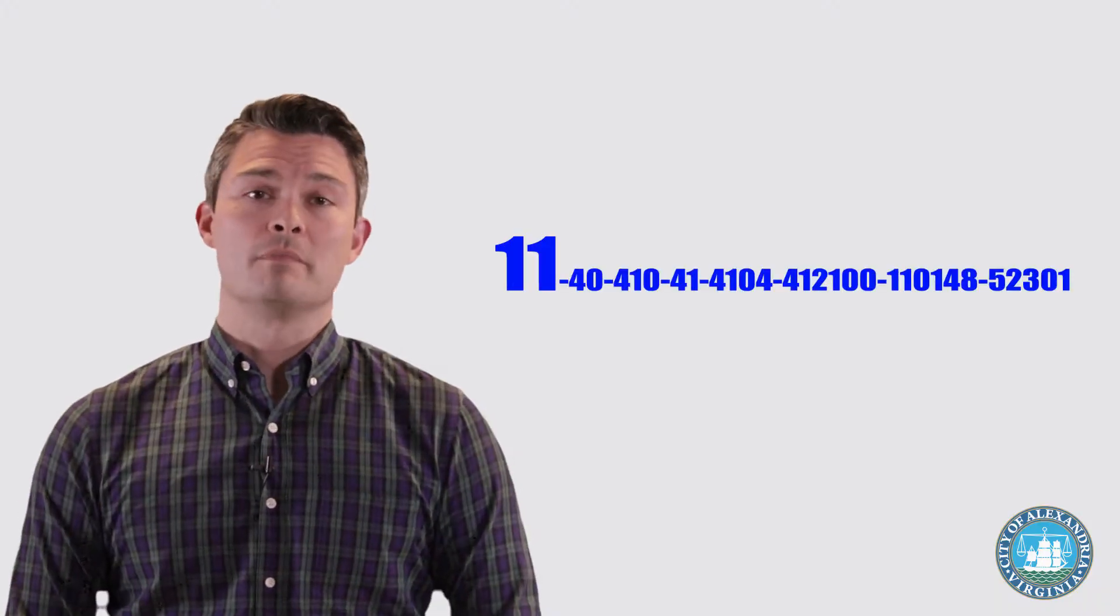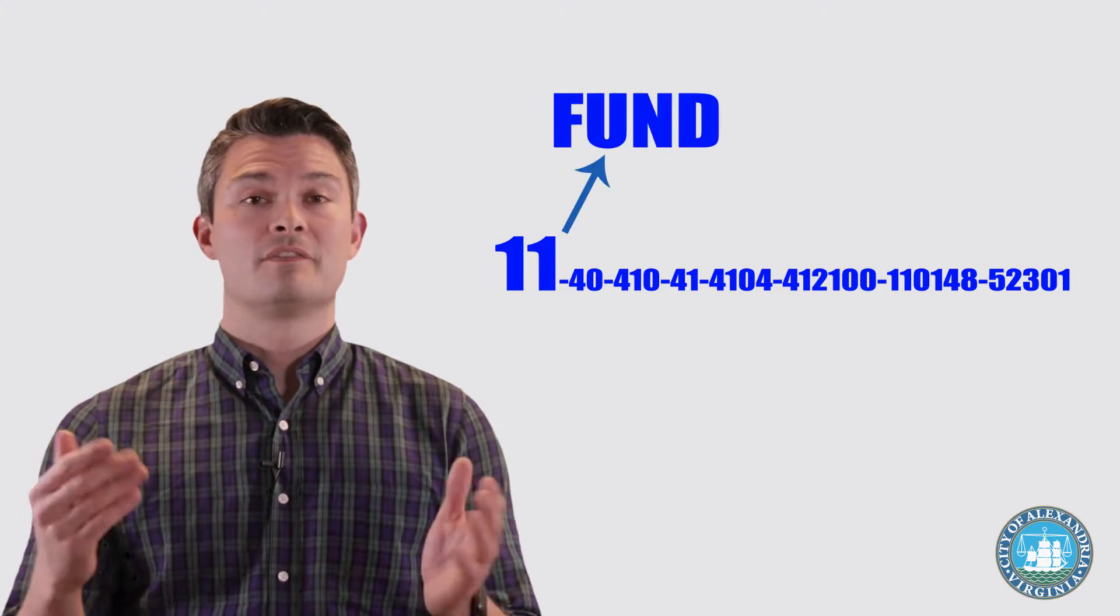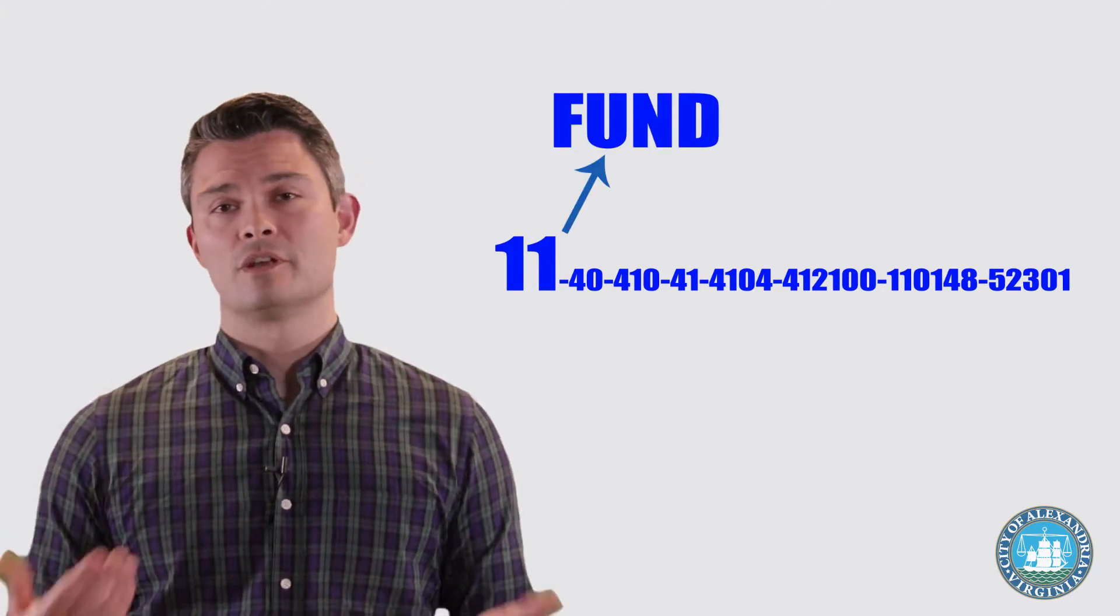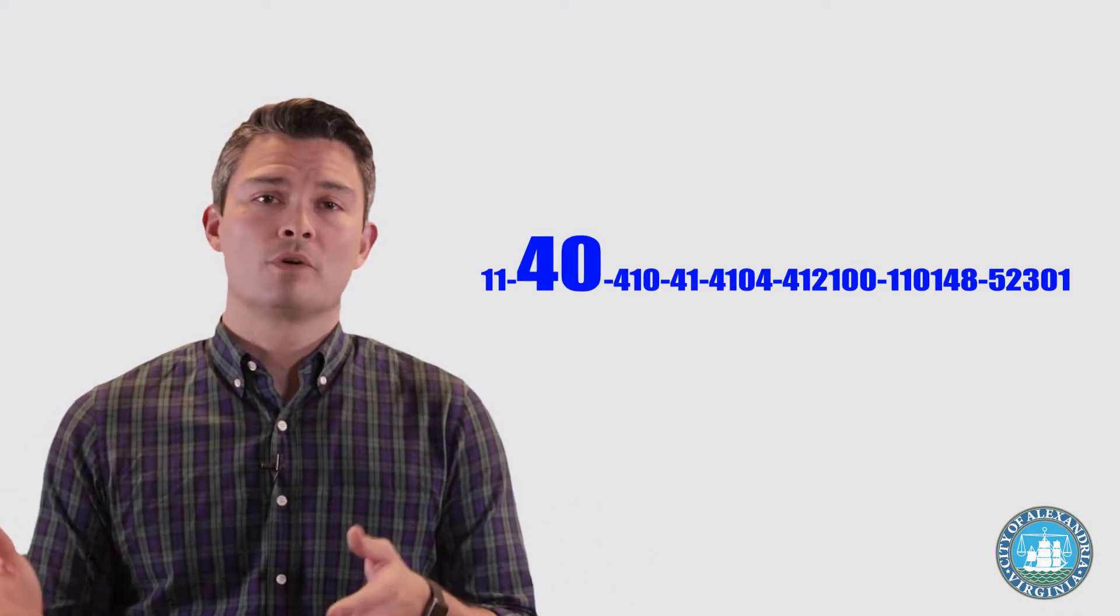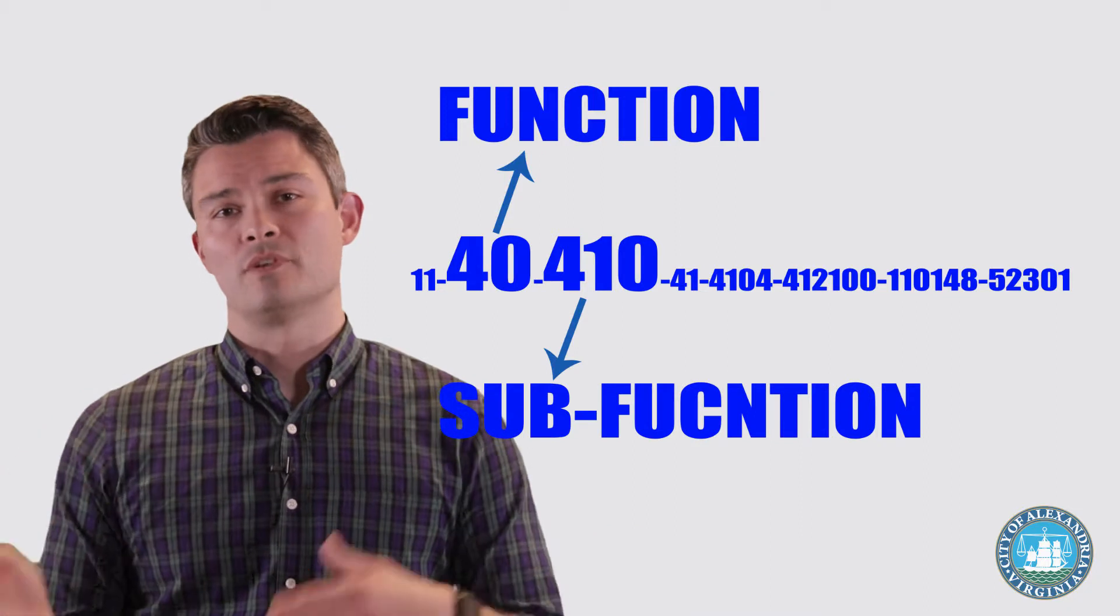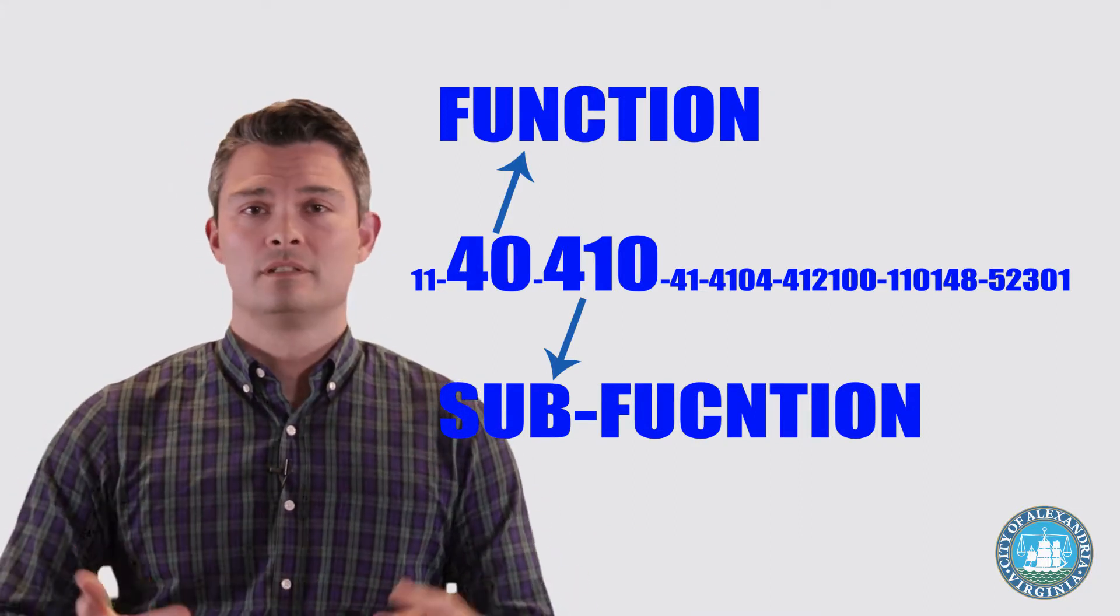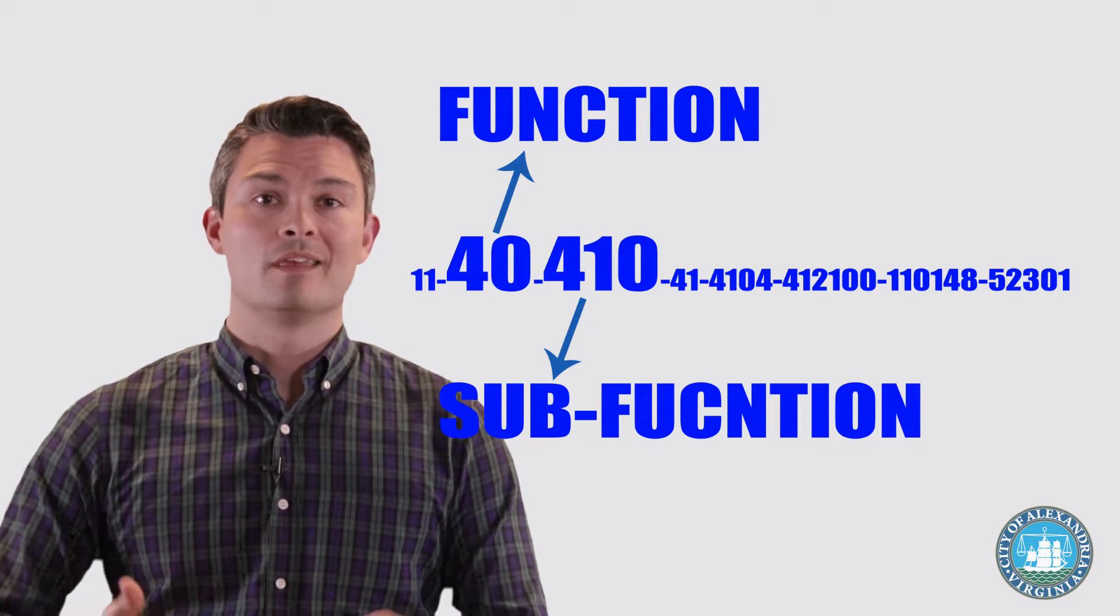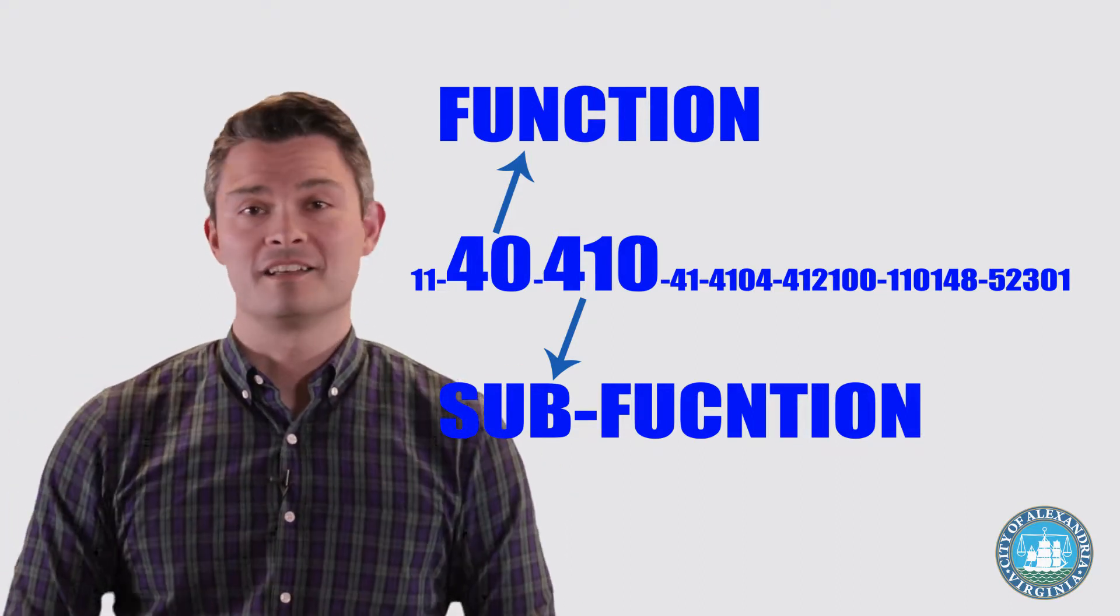So, those first two digits look familiar. They're the same two as at the beginning of this org, and sure enough, that's the fund. In this case, it's the general fund fund 11. The next two segments, the two-digit segment 40 and the three-digit segment 410, are the function and sub-function. And if you want to get into those, then you'll need to become an accountant, join our financial reporting team, and then help us build the CAFR. Which is another way of saying, you're probably not going to need to worry about that.